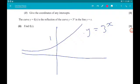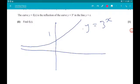Okay, then for part 2, we are told the curve y equals f of x is a reflection of the curve y equals 3 to the power of x in the line y equals x. So let's find f of x. Okay, so f of x is going to look like that. Now, when you reflect a function or a line in the line y equals x, you are finding the inverse function.